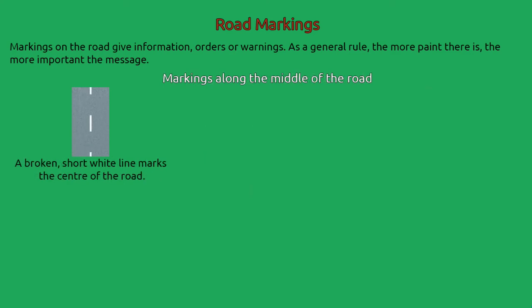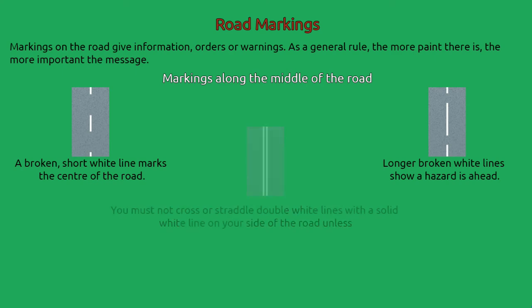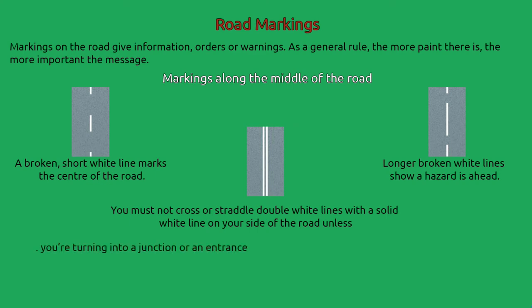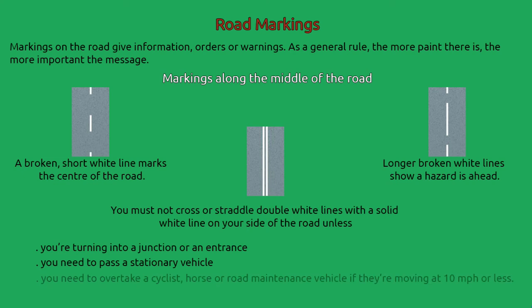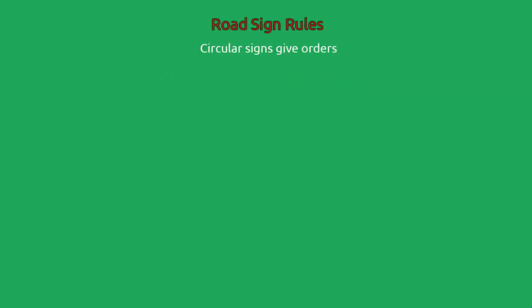Markings along the middle of the road: a broken short white line marks the centre of the road. Longer or broken white lines show a hazard is ahead. You must not cross or straddle double white lines with a solid white line on your side of the road unless you're turning into a junction or an entrance, you need to pass a stationary vehicle, or you need to overtake a cyclist, horse or road maintenance vehicle if they're moving at 10 miles an hour or less.